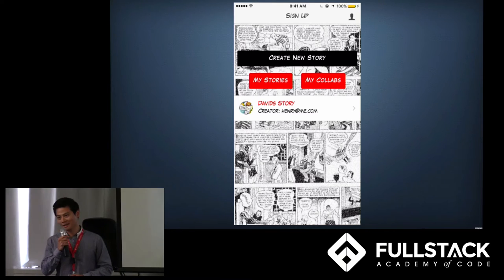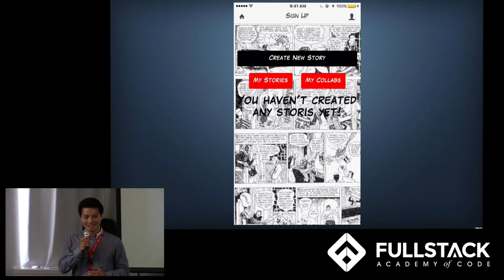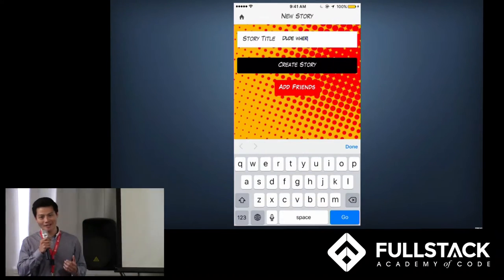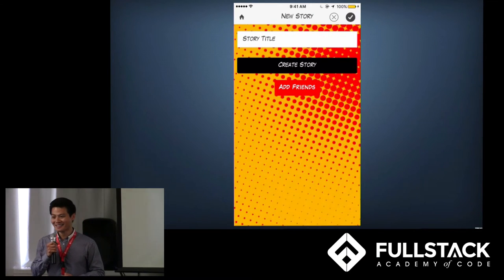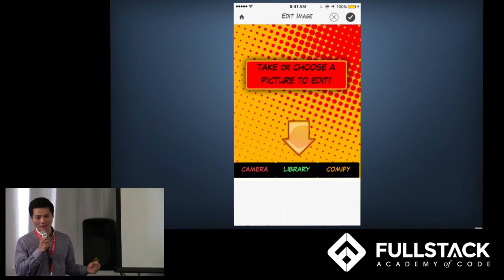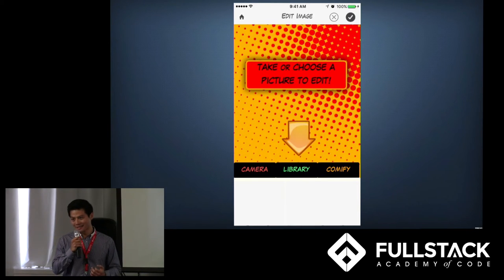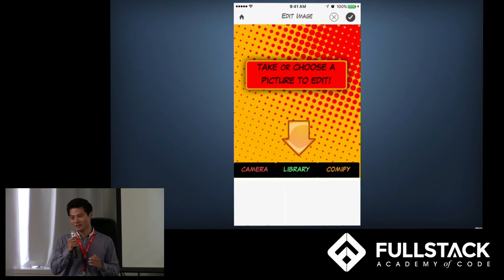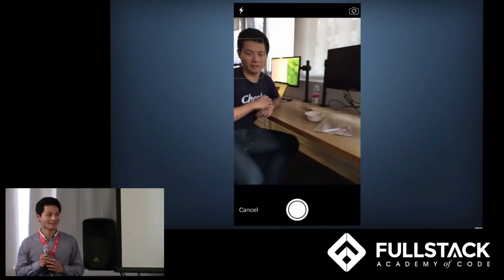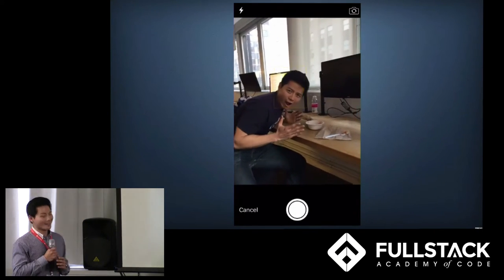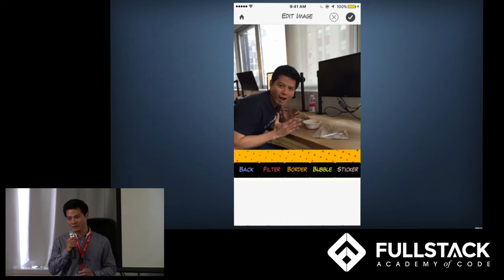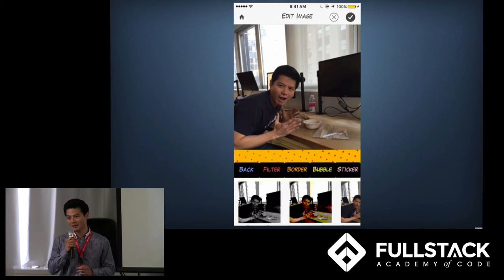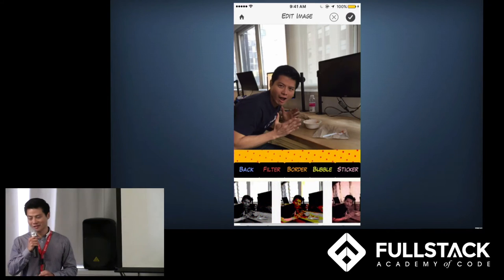So unfortunately at lunch today, while I was coding away, somebody stole my lunch. So I'm pretty angry and I'm determined to investigate and find a culprit. So I create a new story called 'Dude, Where's My Lunch?' and I proceed to use the phone camera to snap a live photo as the first panel in my story. Next, I want to turn this photo into a comic frame. To walk you through the process of the image comifying, I'm going to hand the mic off to my friend Jeff.